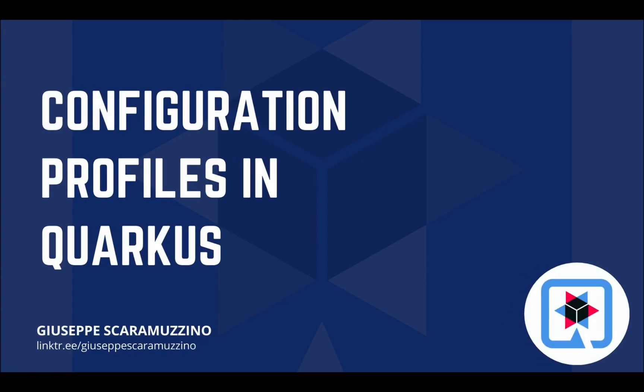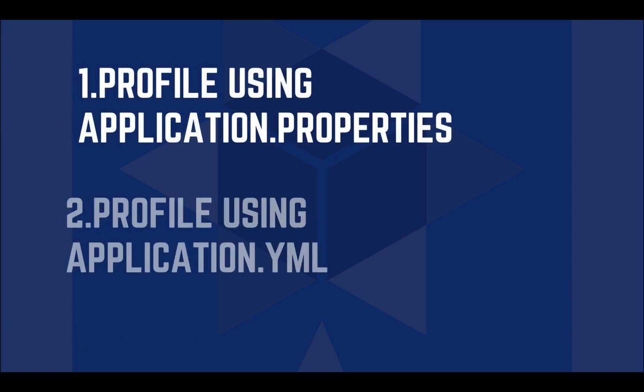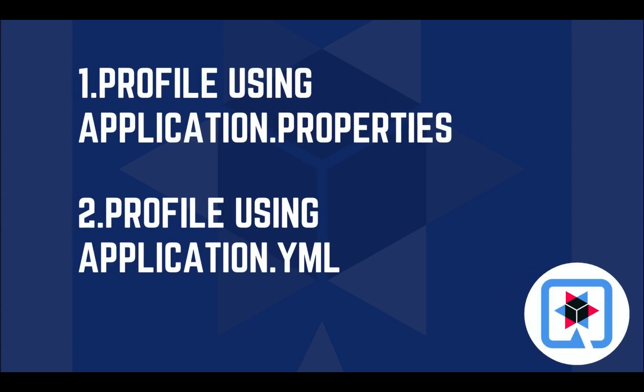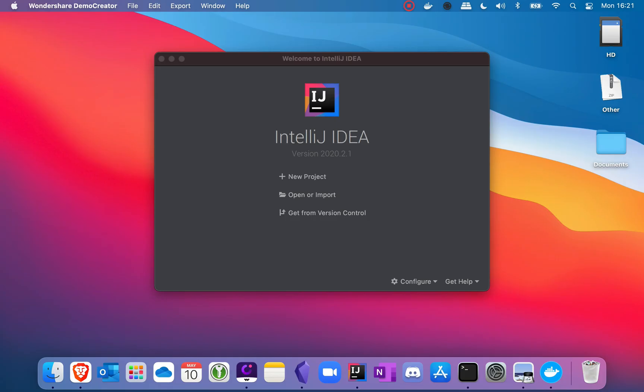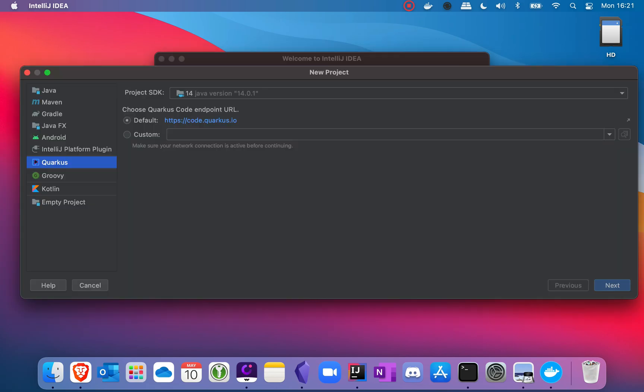Hello and welcome back to my channel. In this video you are going to learn how to use the configuration profiles in Quarkus. In the first part we are going to use the application.properties file, and in the second part of this video we are going to use the application.yaml file. Let's start.